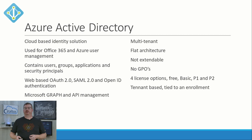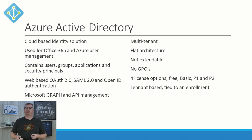Next is Azure Active Directory. If you use an O365 product or Azure, you have Azure AD. It's very different from Active Directory Domain Services, but the two complement each other. While AD supports network-based authentication like Kerberos and NTLM, Azure AD supports web-based authentication such as OAuth and SAML. Here's a list of characteristics: it's a cloud-based identity solution used for Office 365 and Azure user management. It contains users, groups, applications, and security principles. It leverages web-based OAuth 2, SAML 2, or OpenID for authentication, and it can be managed with a Graph API. It's multi-tenant and has a flat architecture.